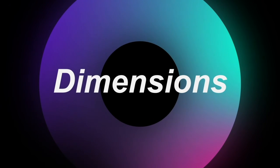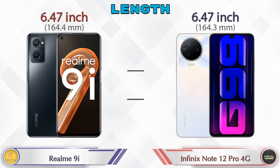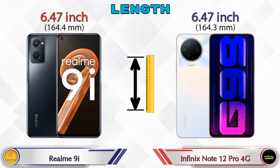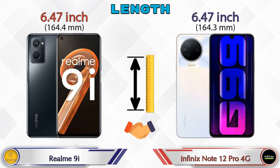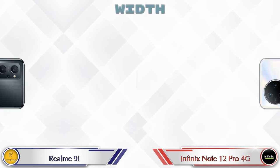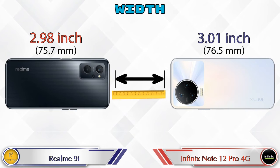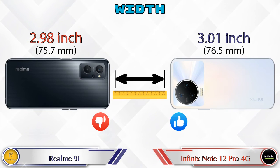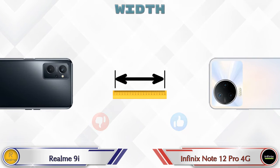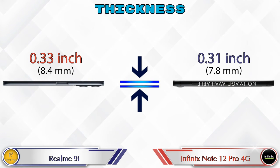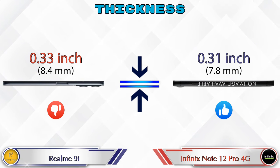Now let's check the dimensions. The length of both phones is the same at 6.47 inches. Width: Realme 9i is 2.98 inches and Note 12 Pro 4G is 3.01 inches. Thickness: Realme 9i is 0.33 inches and Note 12 Pro 4G is 0.31 inches.